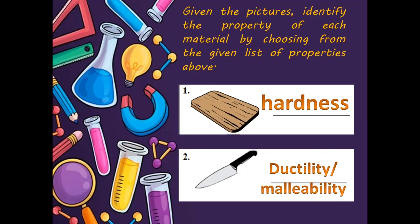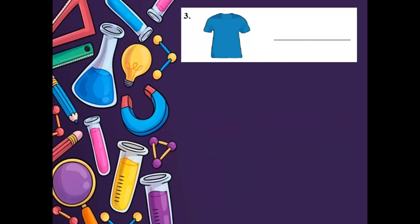Next is cloth — a t-shirt. What is the property of materials we can use to describe a t-shirt? We can use porosity. Pag pinapawisan tayo, inaabsorb ng ating damit — porous, nakaabsorb siya ng water or air. Kapag mainit ang panahon, manipis lang yung damit natin para nakakasarap pag humangin — nahahanginan yung katawan natin. So the property used to describe a t-shirt is porosity.